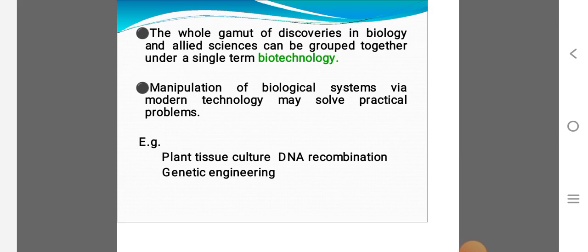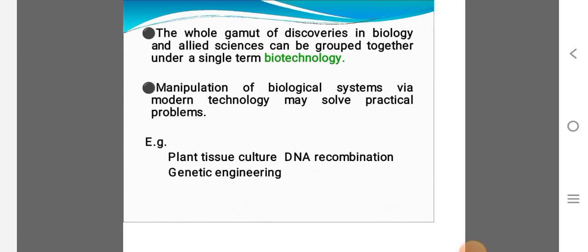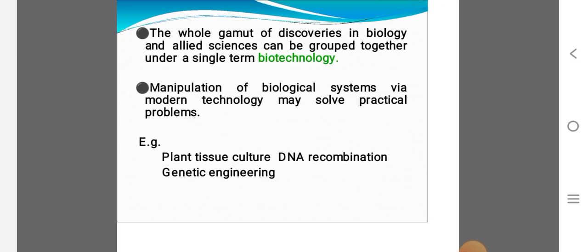It is used in plant biotechnology, manipulation of biological systems via modern technology may solve practical problems. Here manipulation means to produce novel products, you can improve high amount of the cells, high amount of the plants regarding new kind, new characters within plants.